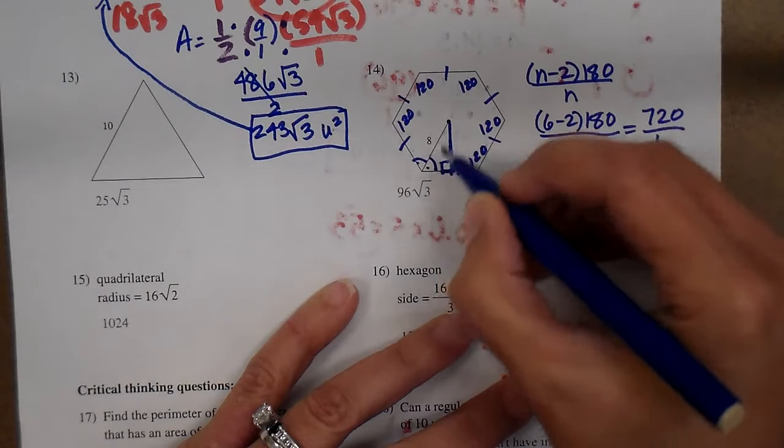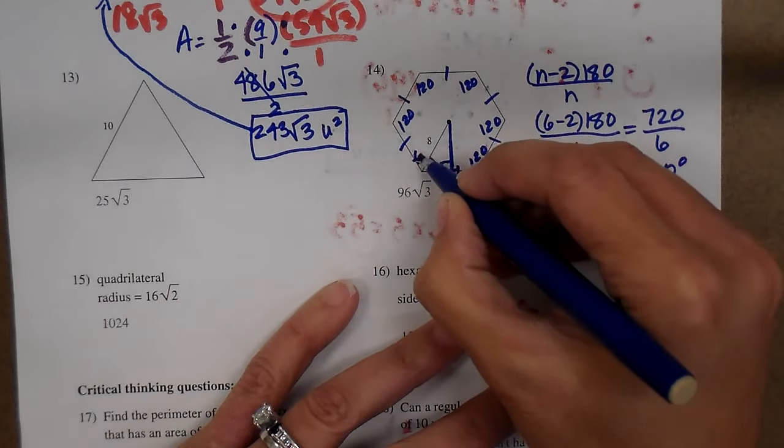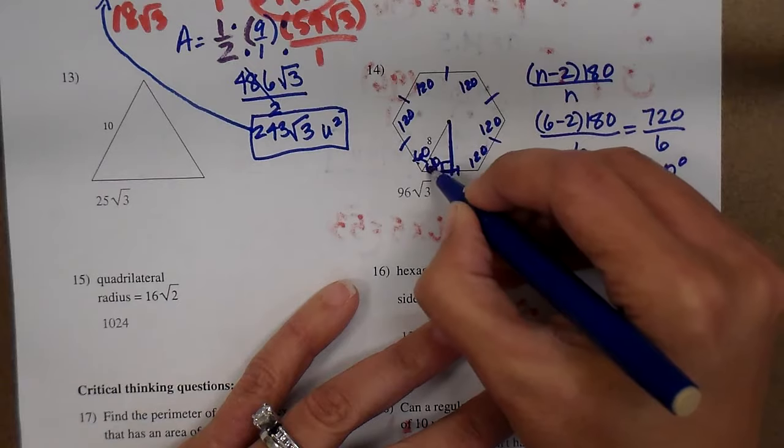These are all 120s. Now, since the radius cuts it in half, what's half of 120? 60. So there's your 30, 60, 90 again.